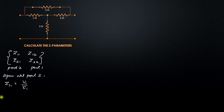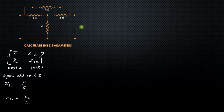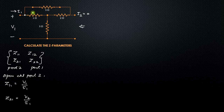Z11 will be the ratio of V1 divided by I1, and Z21 will be the ratio of V2 divided by I1. When we open-circuit port 2, we make I2 equal to zero. When we apply a voltage V1, it causes a current I1 to flow. This I1 current after a certain point gets divided into I3 and I4, where I4 passes through the 3-ohm resistance.